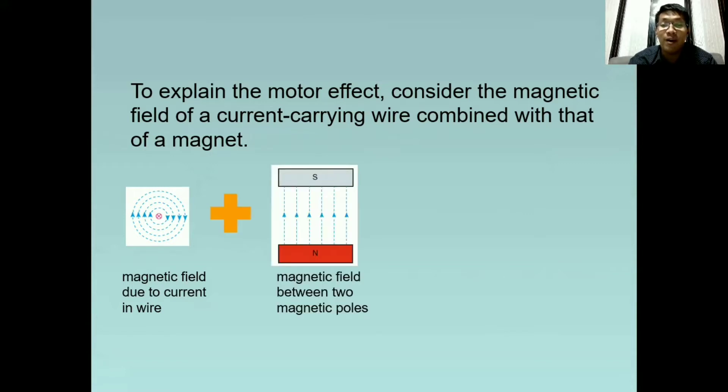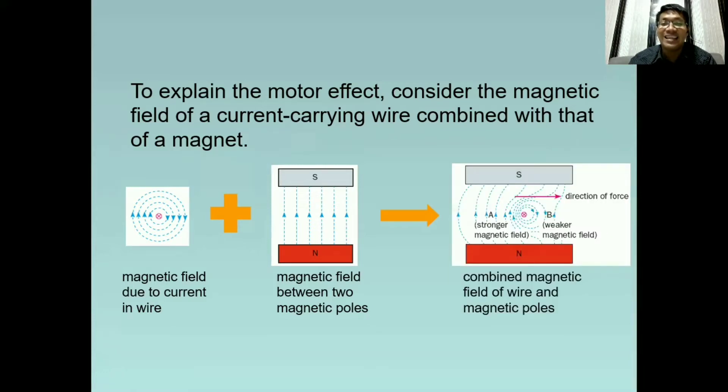the magnetic field formed by a magnet. Kung titignan ninyo ang direction, ay from north to south, laging ganon. And the result will be like this, so parang meron tayong dalawang magnetic field na nag-i-interact sa isa't isa at dahil